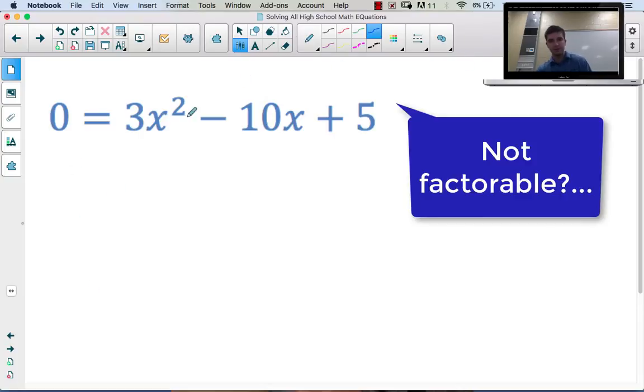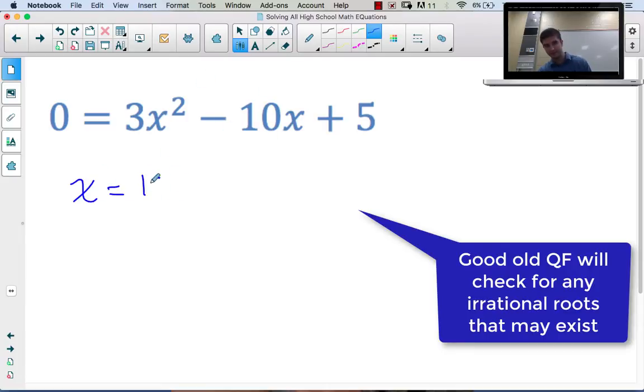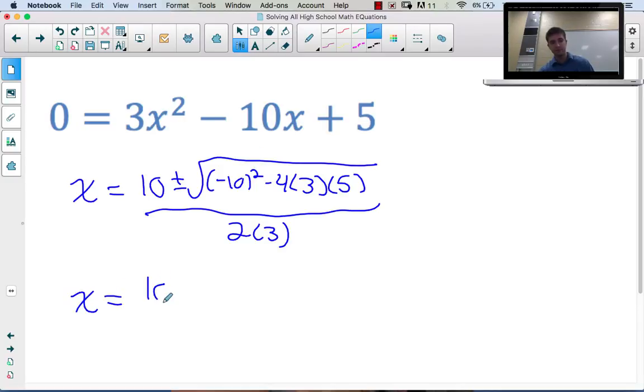What if it's not factorable? If we try to find numbers that multiply to 15 and add to -10, we can't find them. That doesn't mean there are no answers, just no rational answers. There may be irrational answers. We determine this using quadratic formula: x = (-b ± √(b²-4ac))/(2a). If the discriminant under the square root is negative, we get no answers. If zero, one answer. If positive, two irrational answers.